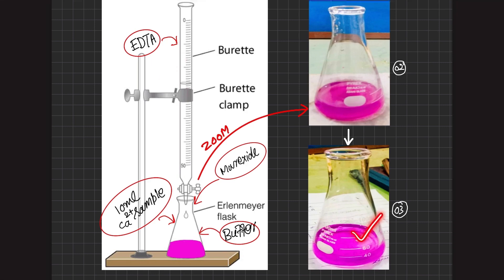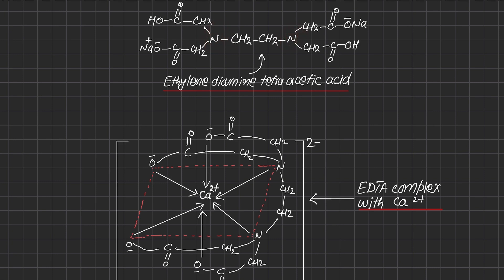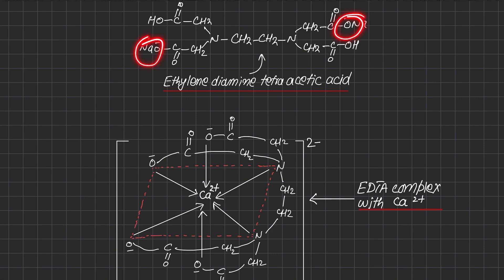This slide describes the role of the titrant EDTA, which stands for ethylene diamine tetraacetic acid. It has an ethylene group, diamine groups, and four tetraacetic acid groups. Rather than taking EDTA in its pure acid form — which is insoluble — we take the disodium salt of EDTA to make it soluble. Tetrasodium salt is avoided as it would be too basic and cause the metal to form hydroxides.